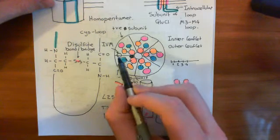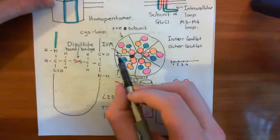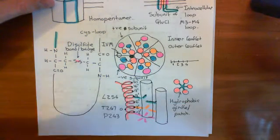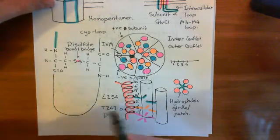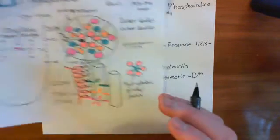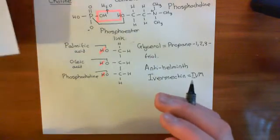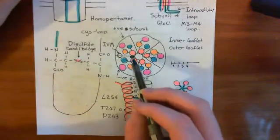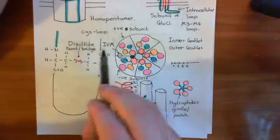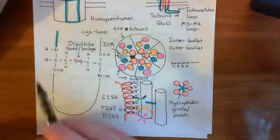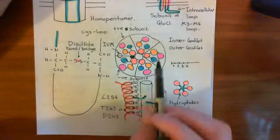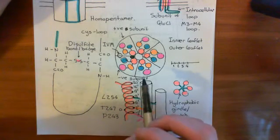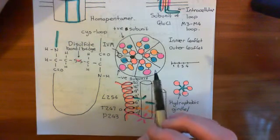Ivermectin is also a partial agonist for this receptor, so it will cause it to open. Let's discuss the changes that both of these drugs — POPC and ivermectin — have on the channel, and how they actually cause it to open.